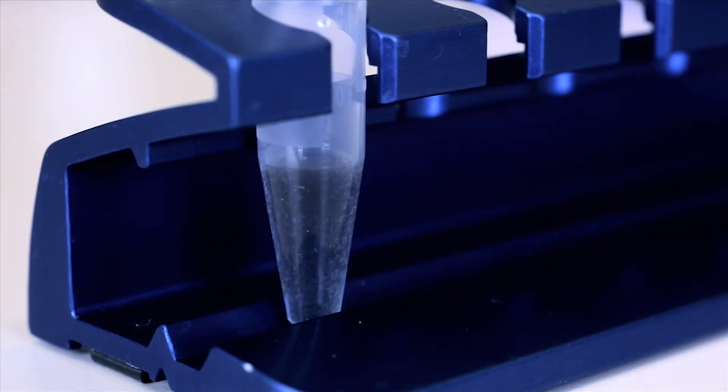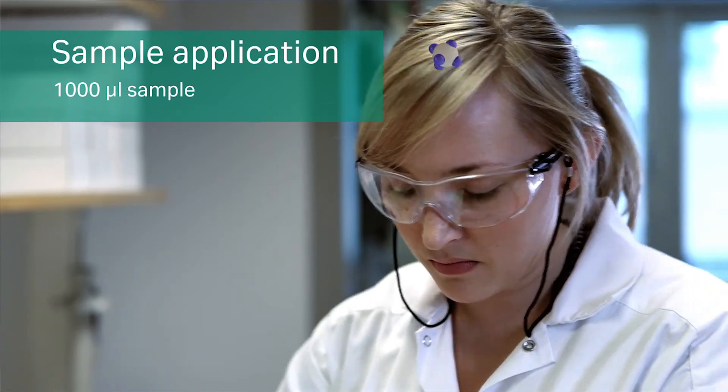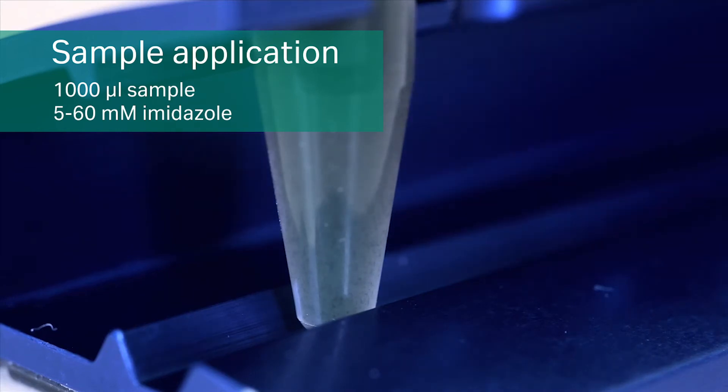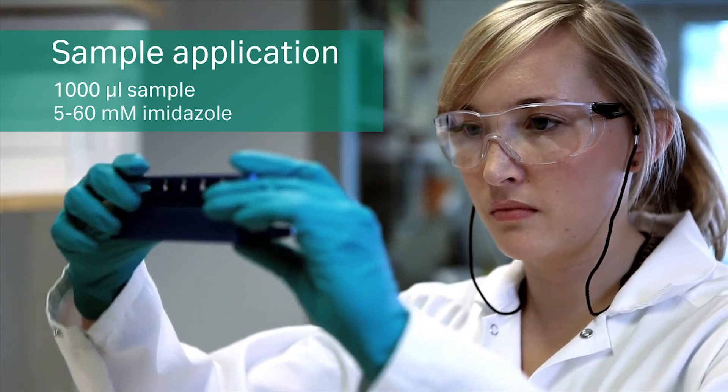Immediately after equilibration, add 1,000 microliters of sample containing 5 to 60 millimolar imidazole. If the sample volume is less than 1,000 microliters, dilute the sample to 1,000 microliters with binding buffer.